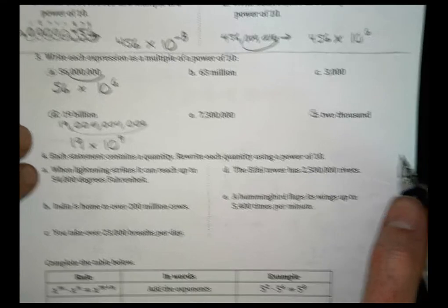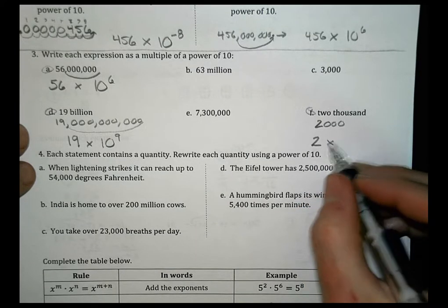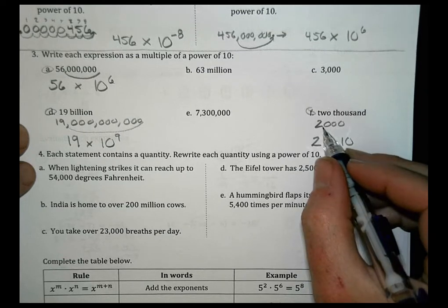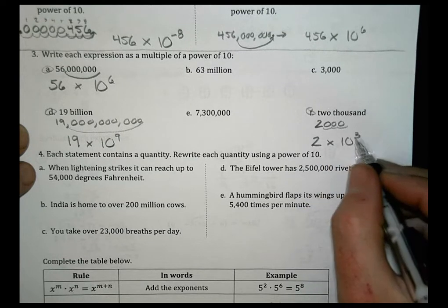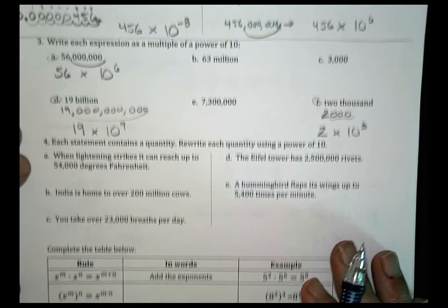For F, we see it's 2,000. So we can write that as 2 times 10 to the 1, 2, 3 places. And you can do B, C, and E on your own or check them.